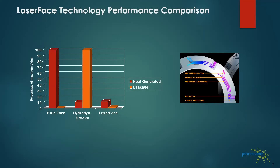The bar chart on the left is a comparison between plain face seals, hydrodynamic grooves like a hydro pad, and the laser face technology shown on the right. This comparison uses a good lubricating fluid like lube oil, with 100% always being the highest recorded value. The laser face gives a combination of ideal performance in terms of both leakage and heat generation. There are compromises made with either a plain face configuration or a simple passive approach with grooves, but we're able to marry those advantages by utilizing the entry flow and return flow structure with the laser face technology.